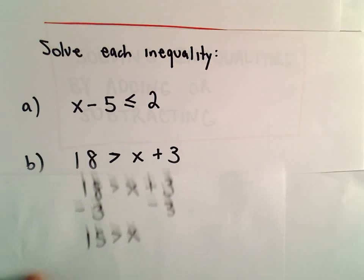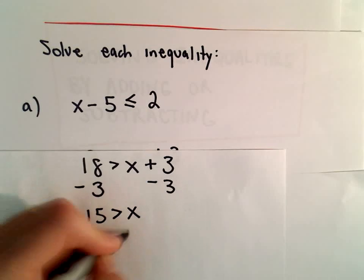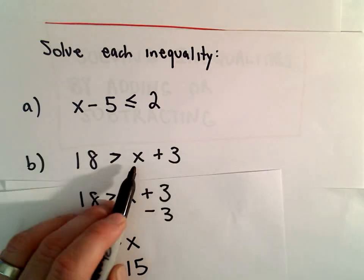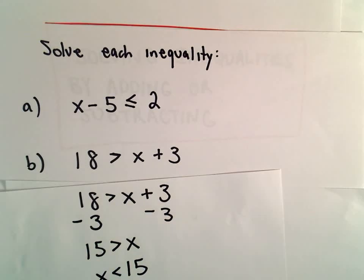So it says 15 has to be greater than x, or equivalently, x has to be less than 15. If we take any number that's less than 15 and we add 3 to it, we'll get something that's going to be smaller than 18.